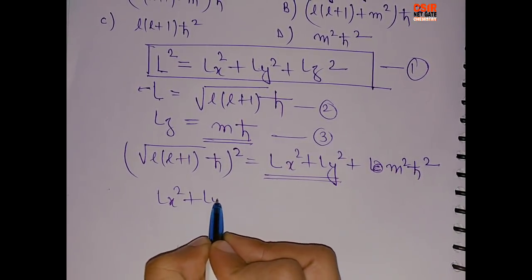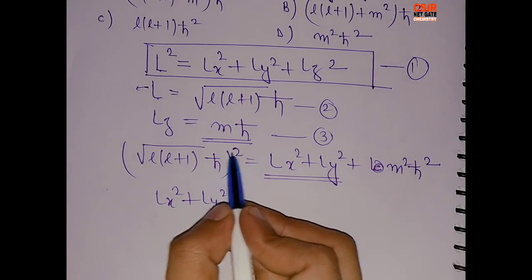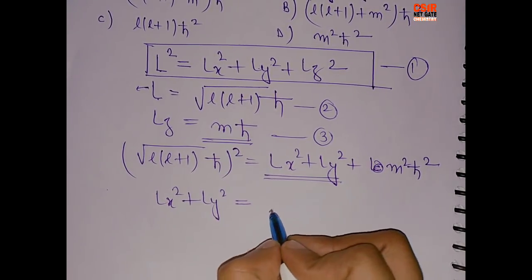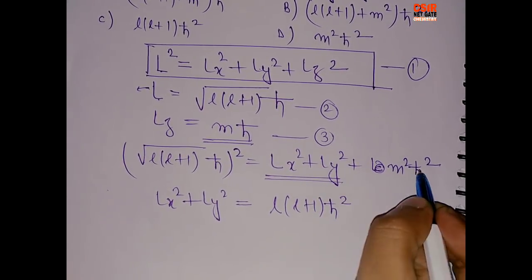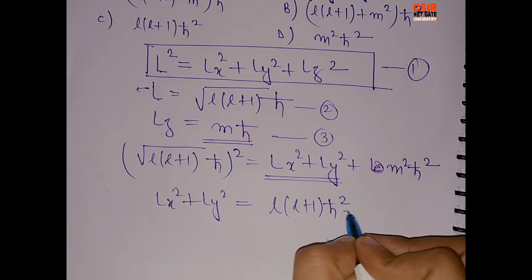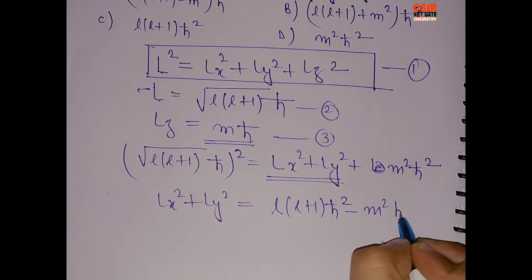+ LY² equals to - when this root gets squared and cancelled - L(L+1)ħ². This will come to the left-hand side minus m²